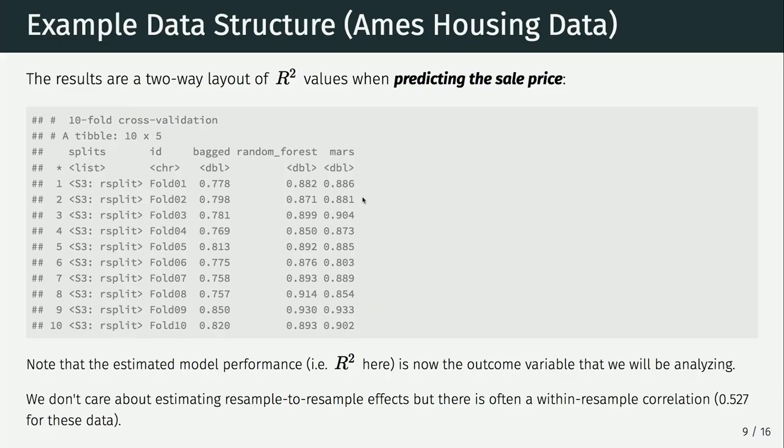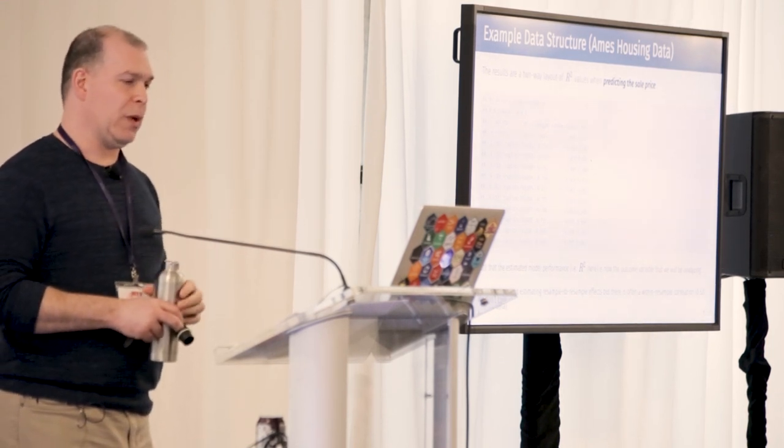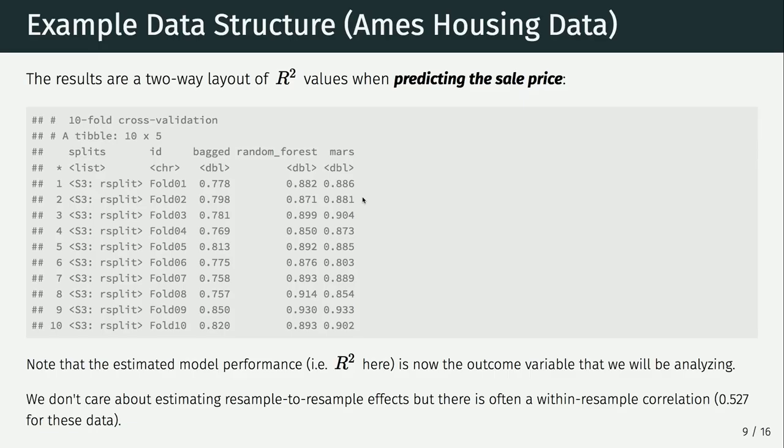I used tenfold cross-validation, which means ten separate resamples. There are rows for each one of these resamples using the R sample package. I fit a bagged tree, random forest, and a multivariate adaptive regression spline (MARS) model to these data. In the first fold, these are the R-squareds calculated for the assessment set. The second resample gives more assessment set R-squareds and so on. So we have a full data matrix.